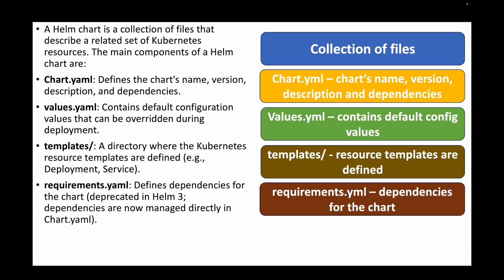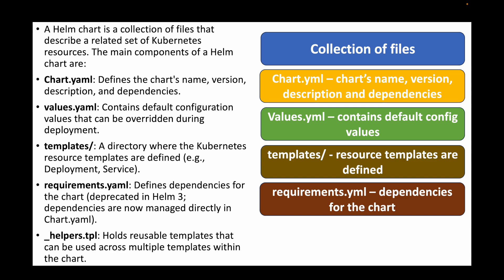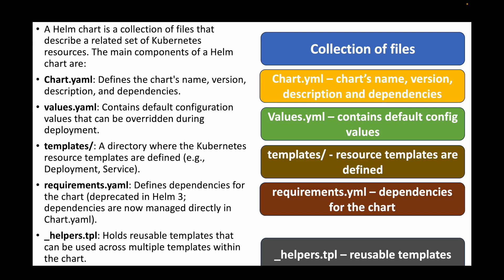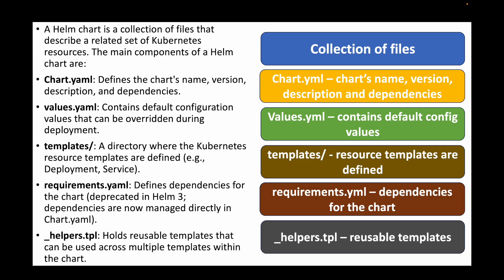We also have the requirements.yaml file, where dependencies needed for the chart are defined. This was deprecated in Helm 3 and now dependencies are managed directly in the chart.yaml file. Finally we have the helpers.tpl file, which contains reusable templates that can be used across multiple templates within the chart. So a Helm chart contains the chart.yaml, values.yaml, templates directory, the requirements.yaml (now gone with Helm 3), and the helpers.tpl file.